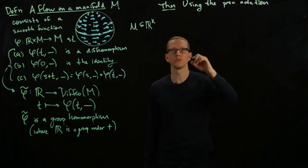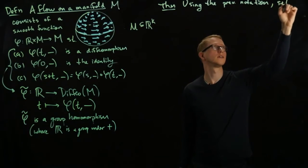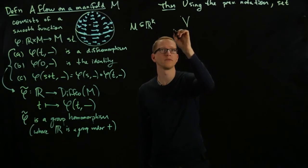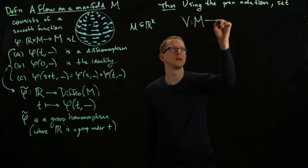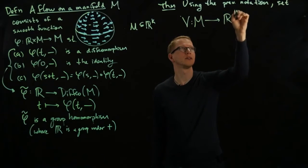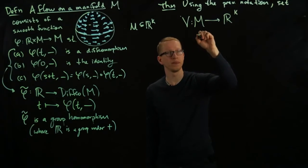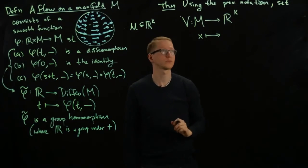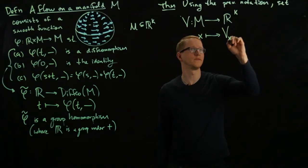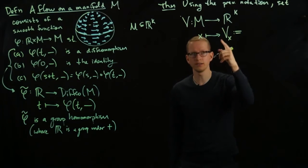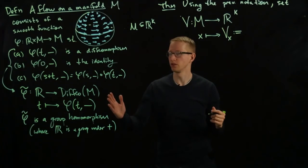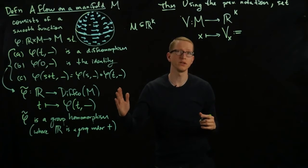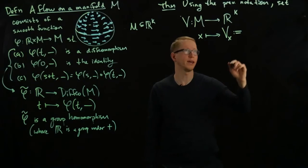So we can set a function V from M to R^K and the assignment sends any point x on M to V from M to V. But what is V? We use the flow that we have. And what we do is we differentiate this flow at time t equals zero at any point x.